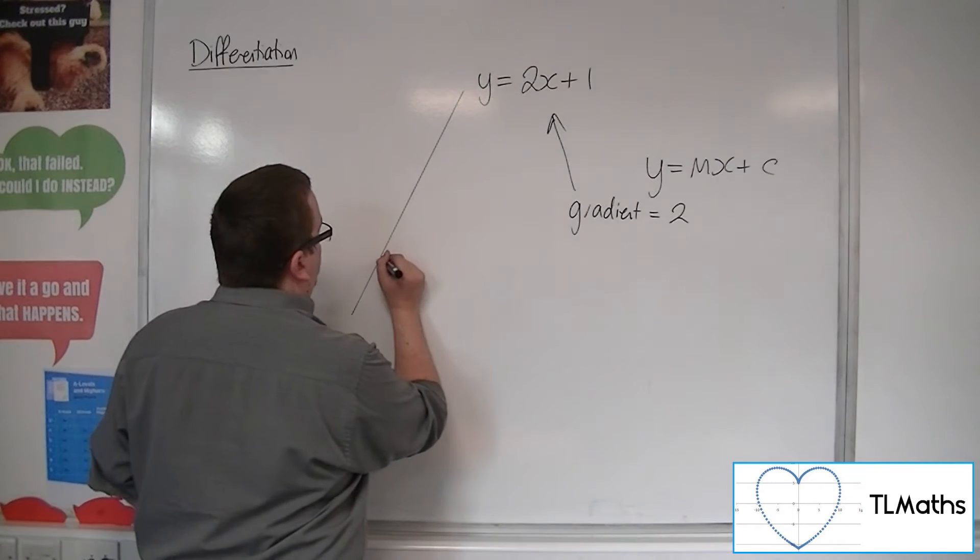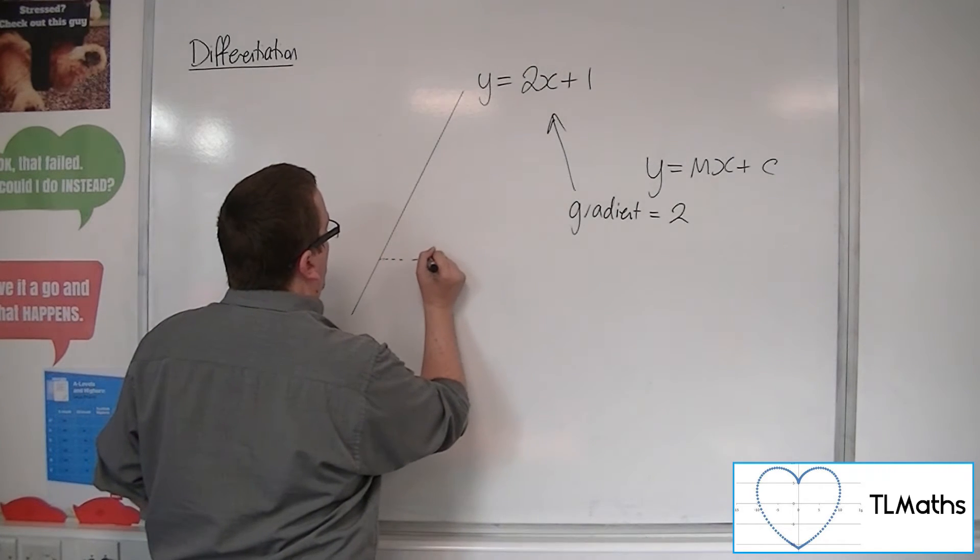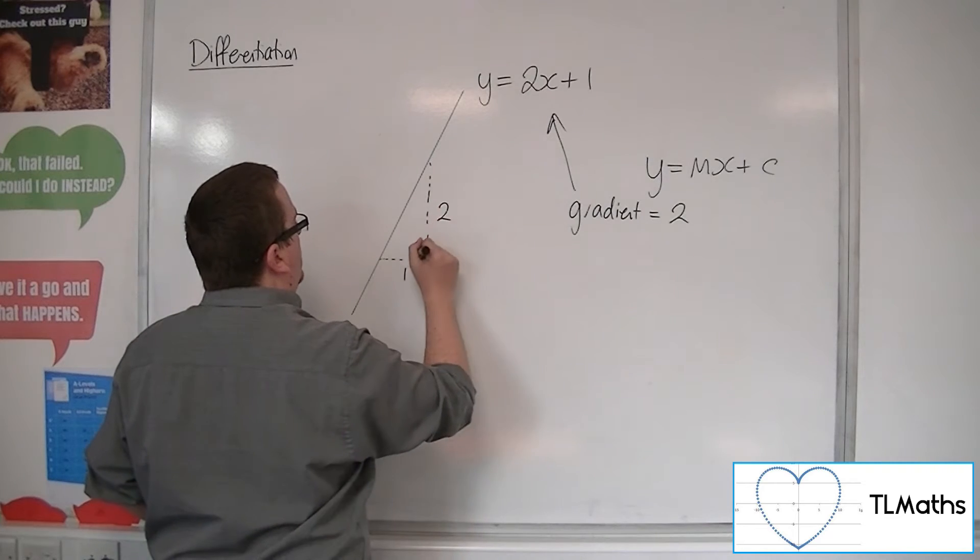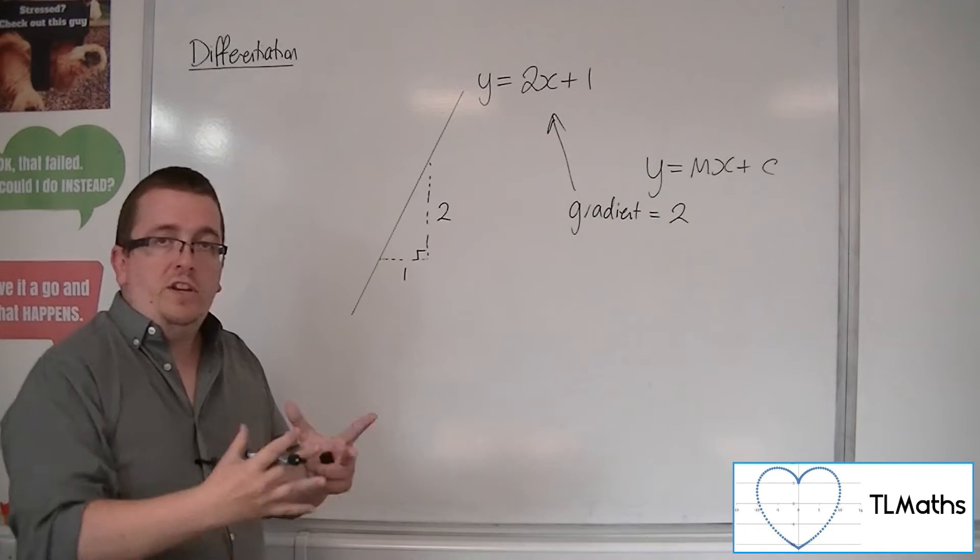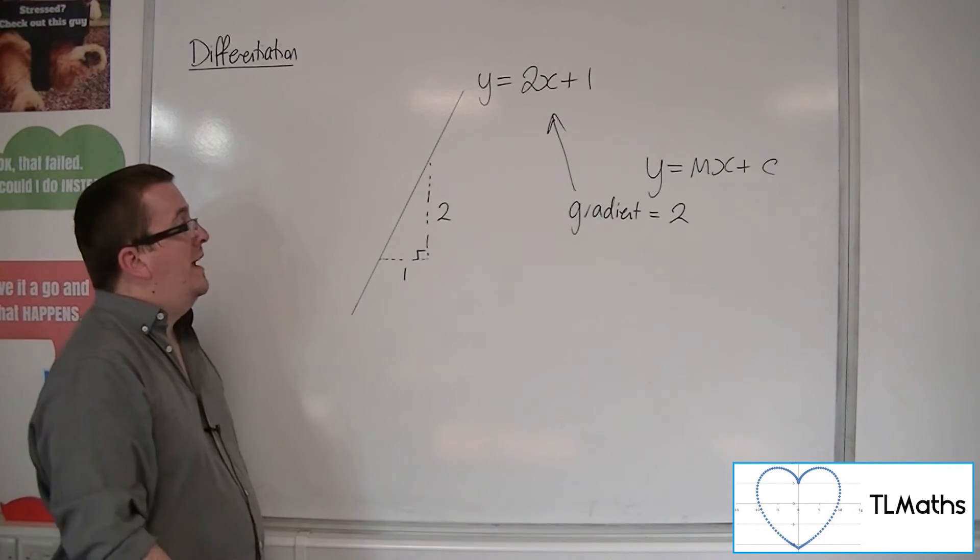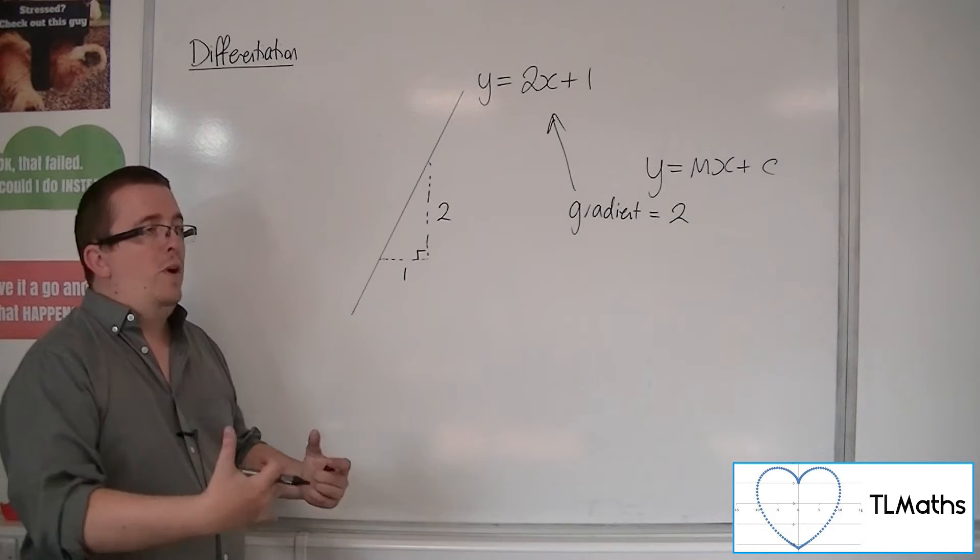Now, what that means is that for every 1 along, I am going up 2 units. Every 1 unit along, I move up 2. That's what it means for a gradient of 2.